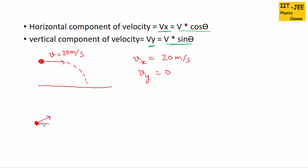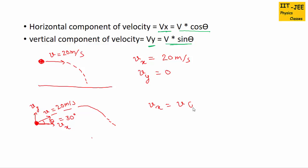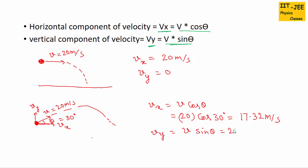If an object is launched at some angle theta, we need to break the velocity into Vx and Vy. Suppose V equals 20 meters per second and theta equals 30 degrees. To find Vx we use V·cosθ: 20·cos30° gives 17.32 meters per second. To find Vy we use V·sinθ: 20·sin30° gives 10 meters per second. Using these two formulas we can find Vx and Vy of the initial velocity in projectile motion.